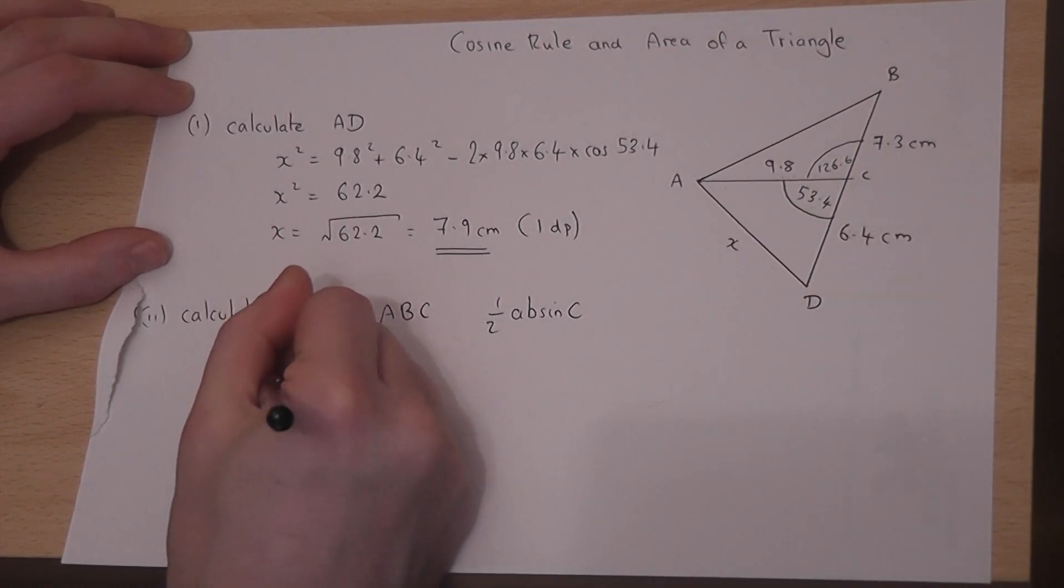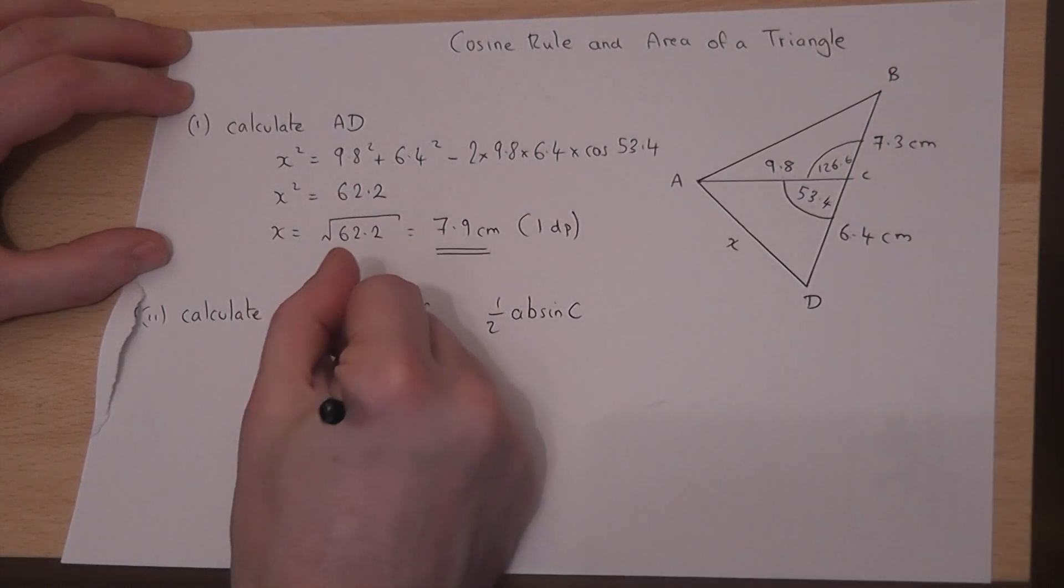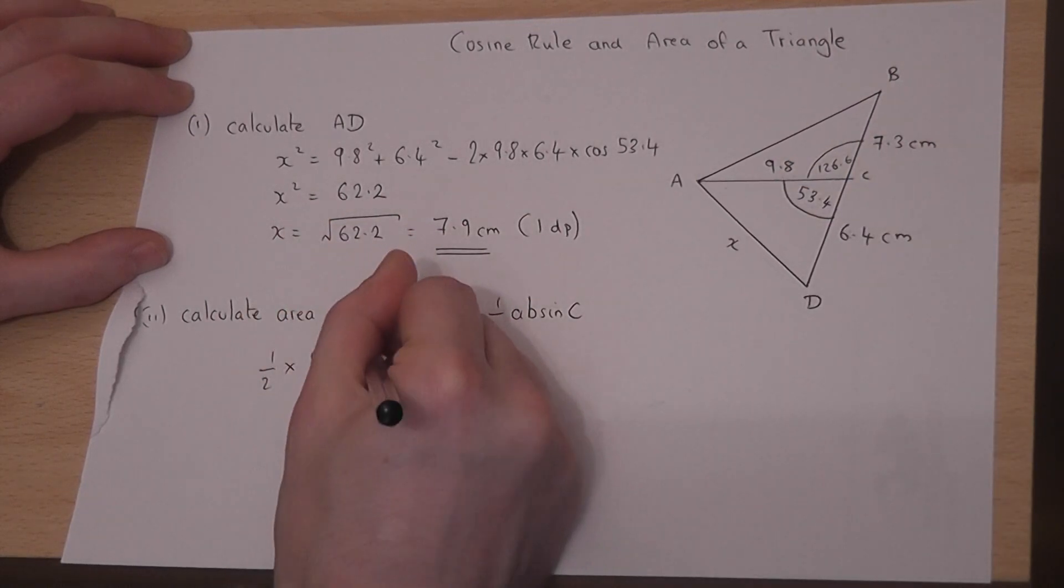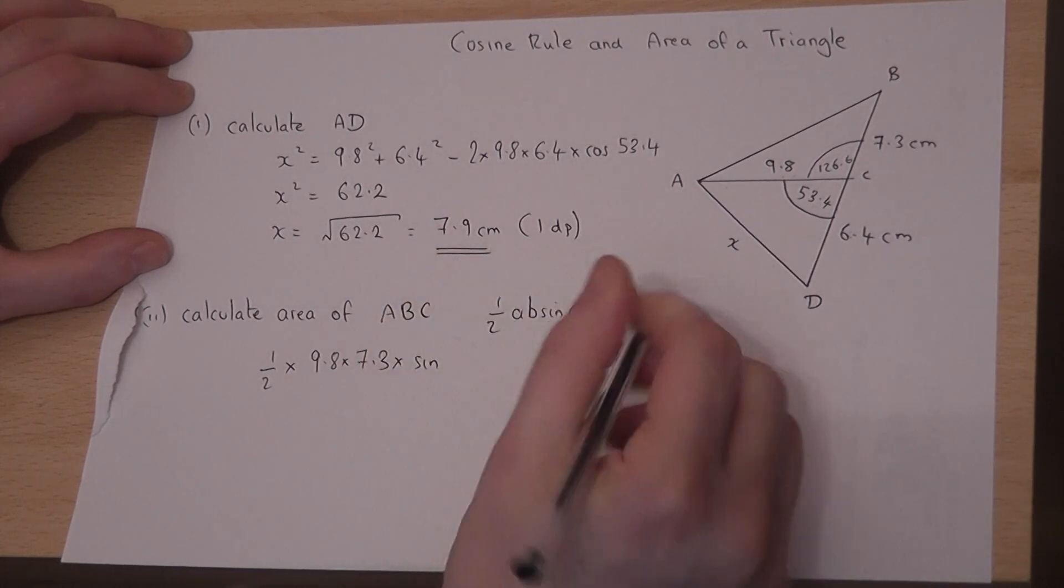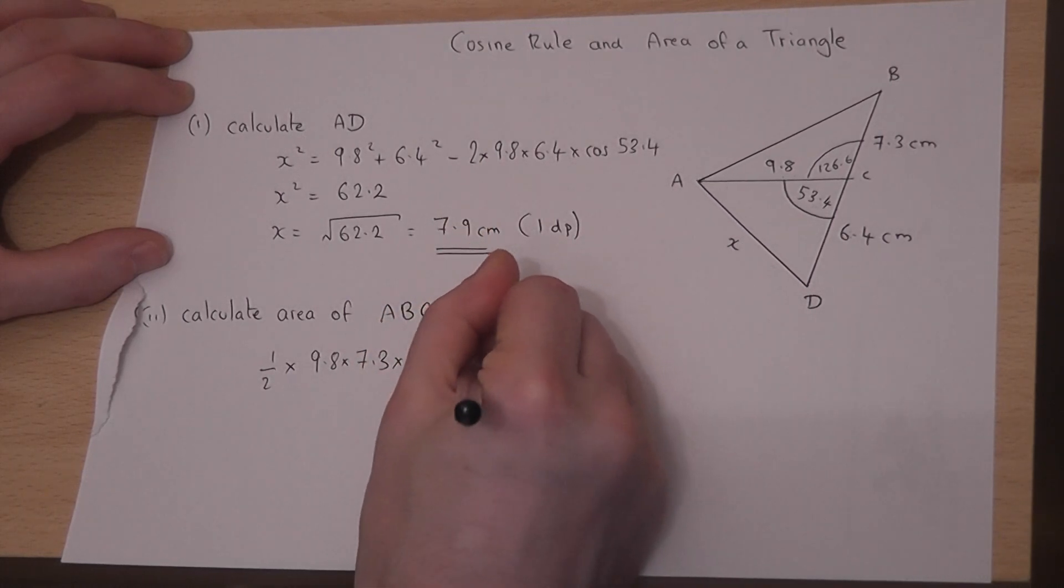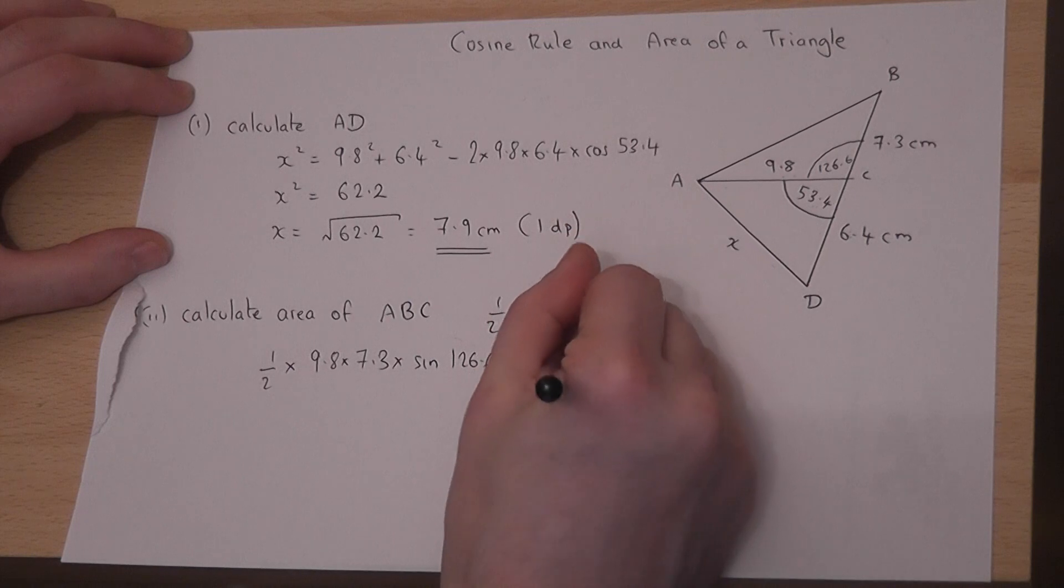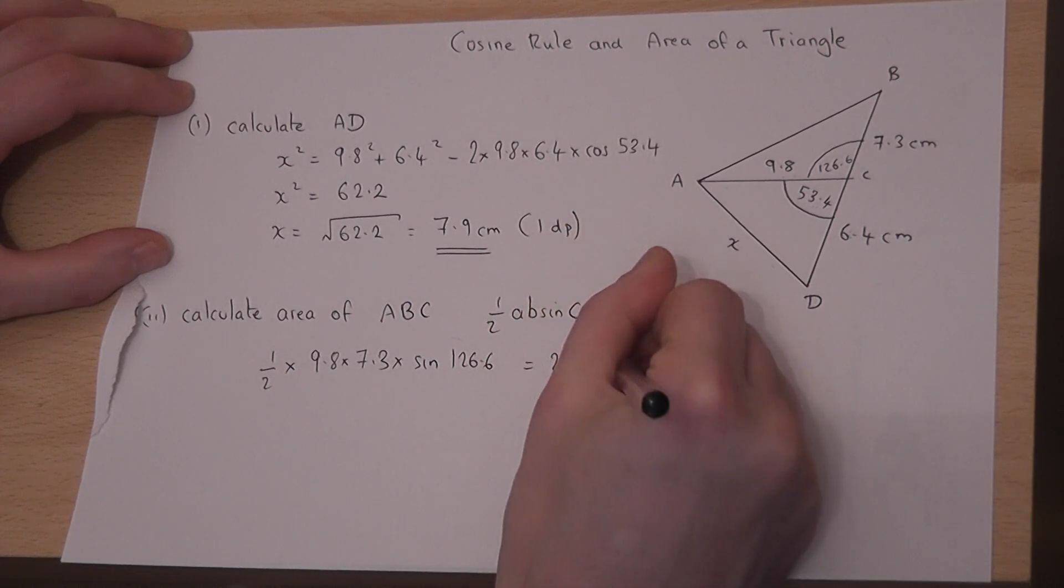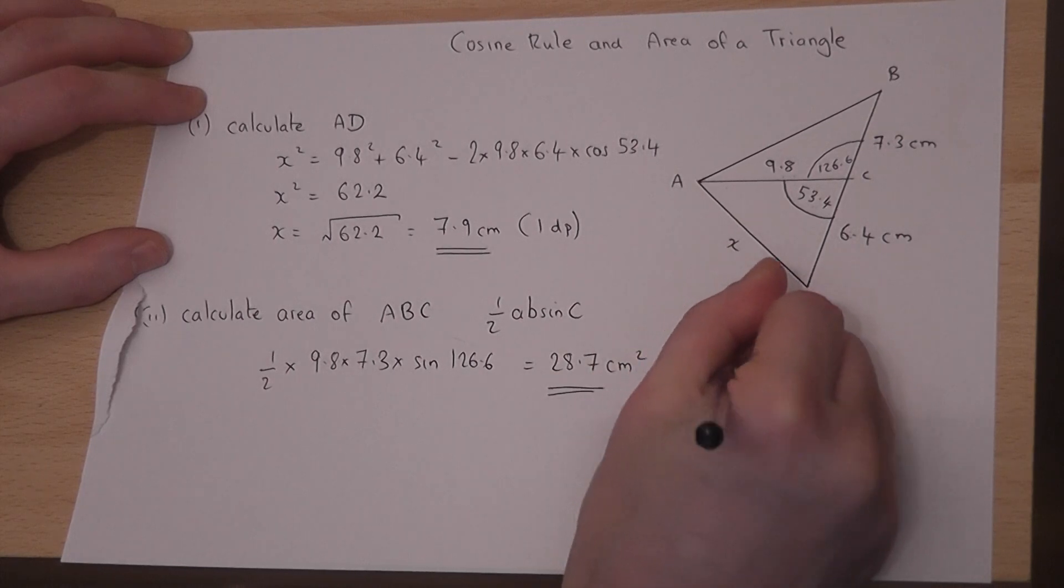I now just use a half. A and B are just those two sides in any order. So I'll do 9.8 times 7.3 and then times by sine of the angle, which is 126.6. Put that into the calculator and we get the answer 28.7 centimetres squared to 1dp.